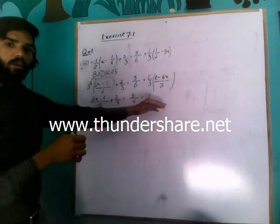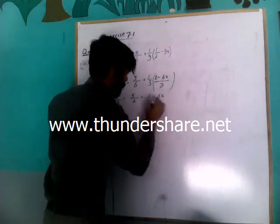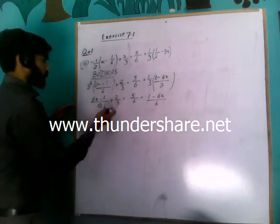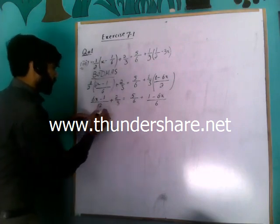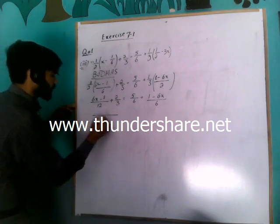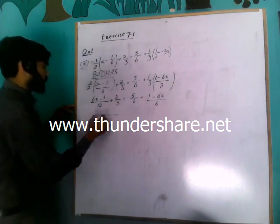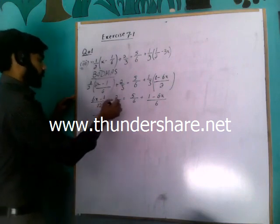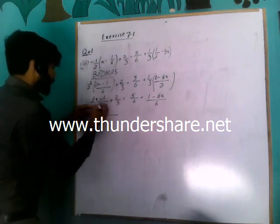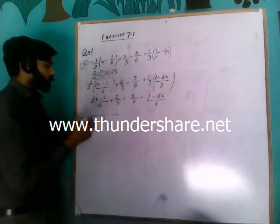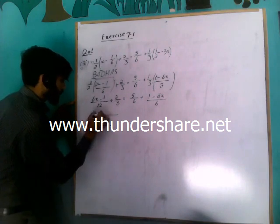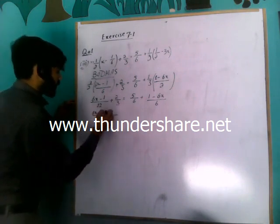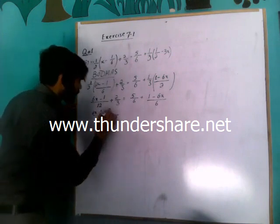When multiplying inside, denominator multiplies with denominator, so 1 minus 6x over 3 into 2 gives 6. Now we will take LCM of both sides. On the left side, 12 will come because 12 is the LCM of 12 and 3, and 3 is a multiple of 12. 12 divided by 3 gives 4, so 1 will multiply with 6x, giving 6x minus 1. 12 divided by 3 gives 4, and 4 multiplied by 2 gives 8.